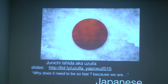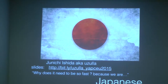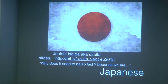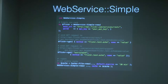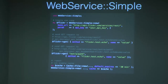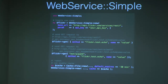At YAPC Europe, about 10 to 12 Japanese guys were there — a big community — and nearly all had a talk, with the leitmotif 'why are we so fast? Because we are Japanese.' One module was Web::Service::Simple. It looks pretty nice for API requests: you create your object with default parameters, and each time you do a GET or POST request, the default parameters are automatically appended to the URL construction. It's an easy way to query an API using a token.